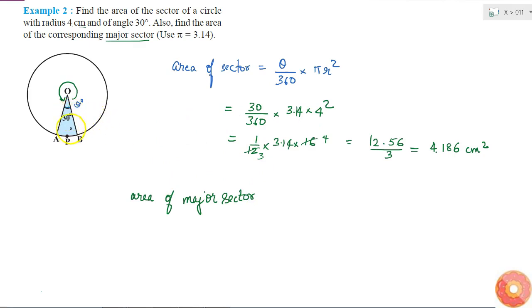From pi r squared, if I subtract the area of this minor sector, I will get the area of the major sector. So area of major sector equals pi r squared minus 4.186 centimeter squared.